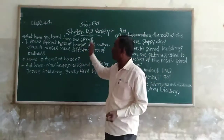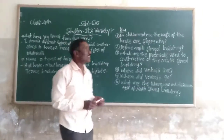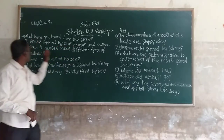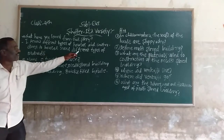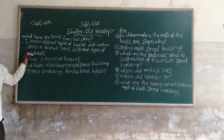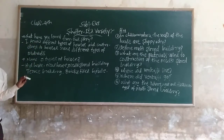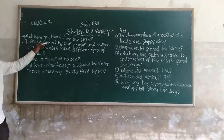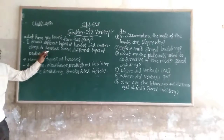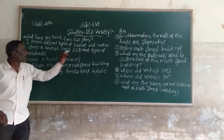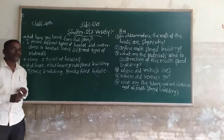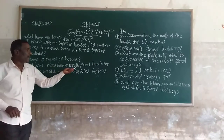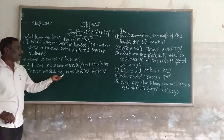Friends, what have you learned from this story? We learn that different types of houses require different types of construction materials. This story is called 'Shelter is Variety.' Now name 5 types of houses mentioned in the story: hut house, mud house, multi-story building, terrace building, and brick-type house.